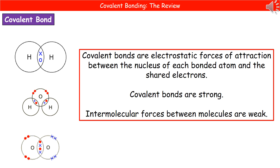The bottom left diagram shows oxygen, illustrating that it's not just a single pair of electrons that can be shared between two atoms — we can share multiple pairs. In the case of two oxygen atoms joining together, they share two pairs of electrons between them, as shown in that diagram.